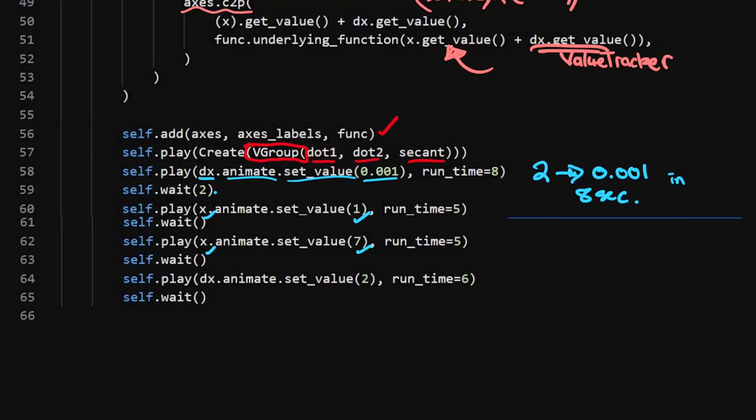And I can go, well, now I want you to go back to seven. Or if I wanted to put it to four or five or wherever I want it to go, I just go x.animate, set_value. And again, this is this x from the value tracker. And this is the dx from the value tracker.